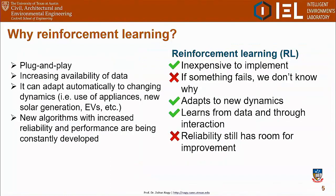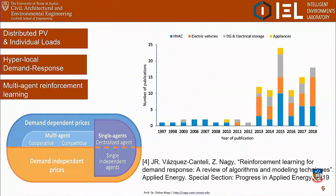Reinforcement learning is a plug-and-play controller, and we can make use of the increasing availability of data to train it. There are more and more algorithms coming out that are increasingly stable. In comparison to the rule-based controller or to the MPC, we can implement it in a more inexpensive way and also achieve good performance thanks to the use of data. There has been an explosion in research in this field, especially in electric vehicles and heating, cooling, and ventilation systems, using reinforcement learning to coordinate them with each other.